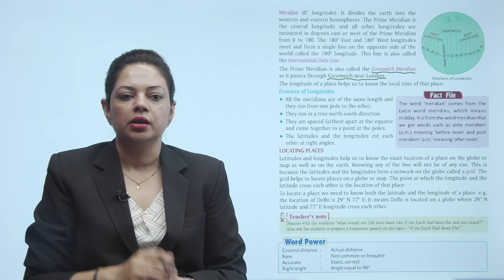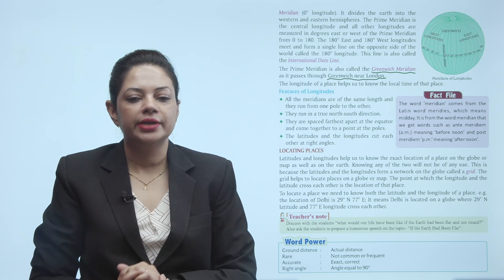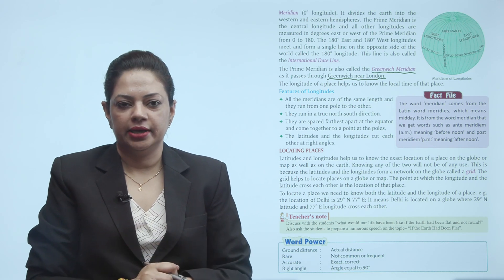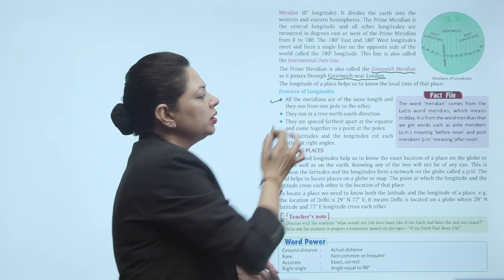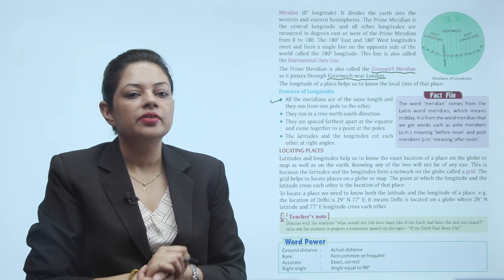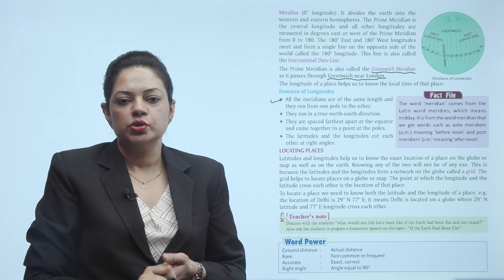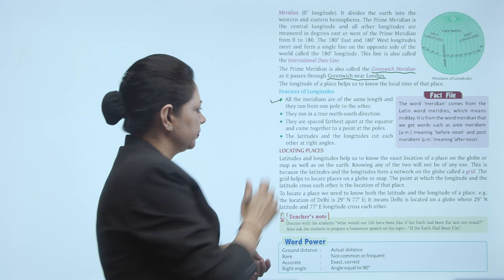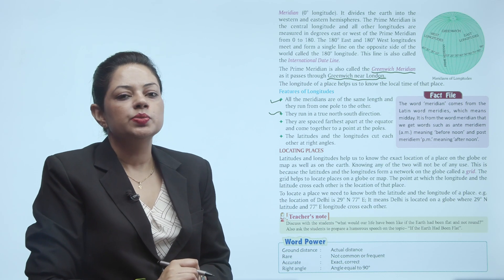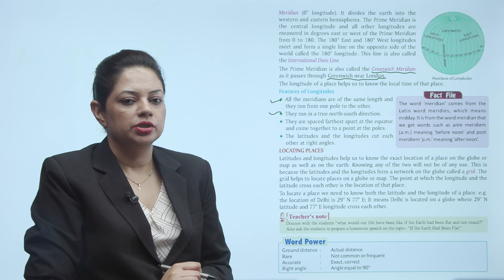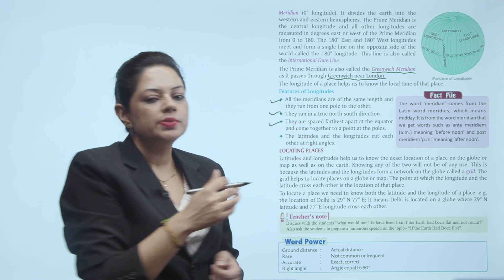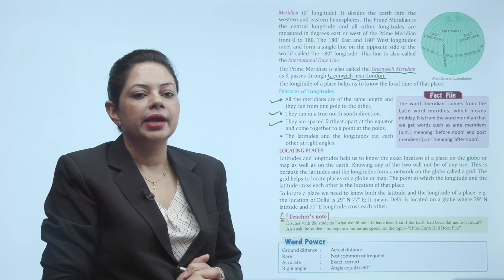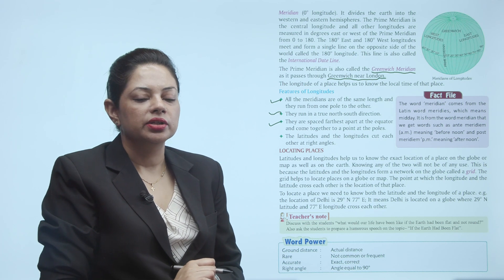Longitudes of a place help us to know the local time of that place. Features of longitude: All the meridians are of the same length and they run from one pole to another in a true north-south direction. They are spaced farthest apart at the equator and come together to a point at the poles. Longitudes and latitudes cut each other at right angles — 90 degrees.